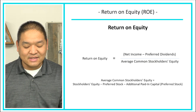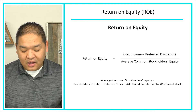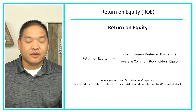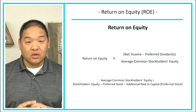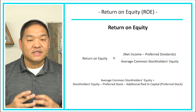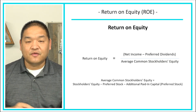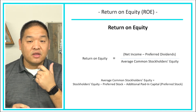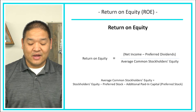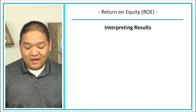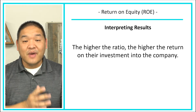Average common stockholders' equity is calculated by taking total stockholders' equity minus preferred stock minus additional paid-in capital for preferred stock. We want to isolate what common shareholders have put into the company, including their share of retained earnings, so we remove the preferred shareholders' par value and additional paid-in capital. This makes the denominator a little more difficult to calculate than before.